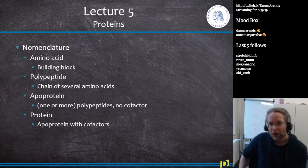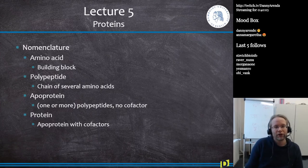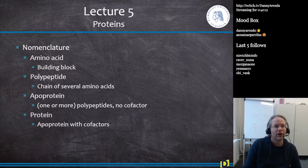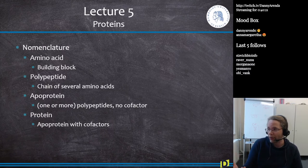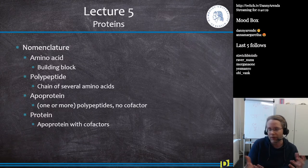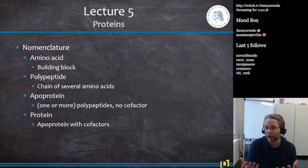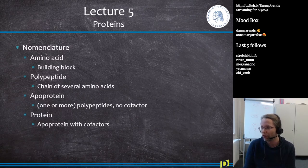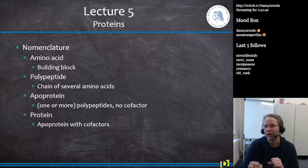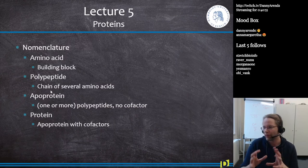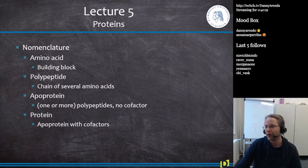In Lecture 5 we talked about proteins. Know the nomenclature: an amino acid is a single building block; a polypeptide is a chain of several amino acids; an apoprotein is one or more polypeptides without the cofactor — for example, without the iron molecule needed to bind oxygen in hemoglobin. A protein is an apoprotein with its cofactor. Hemoglobin, for instance, has four polypeptide chains with iron molecules that bind oxygen.